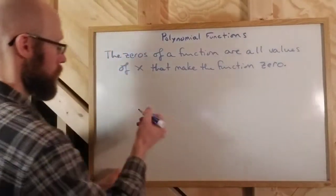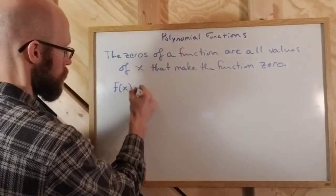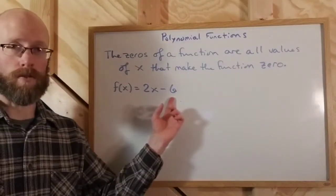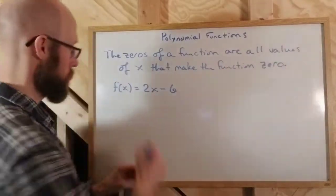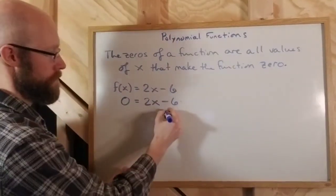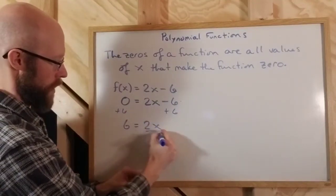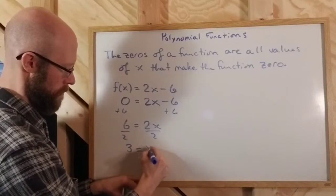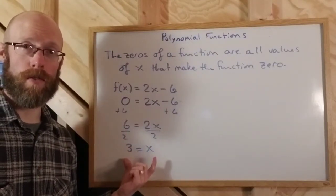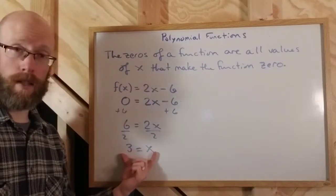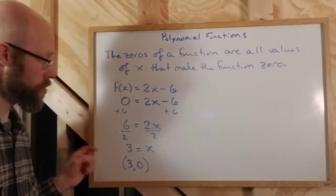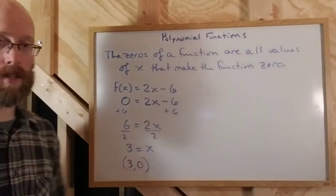If you think about that — if you had a polynomial function, let's take a linear polynomial like 2x minus 6, that's a first degree polynomial. If you wanted to find the zeros of that polynomial, you make the function zero. You plug in zero for y, the function value, and solve for x. So you'd add the 6 and divide out the 2, and you get a value of 3. This makes 3 the zero of the polynomial, but it also is the x-intercept, because it corresponds to the point (3, 0) on the graph.